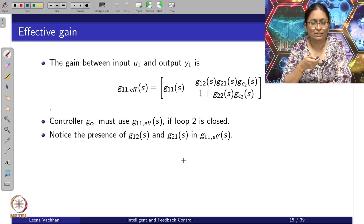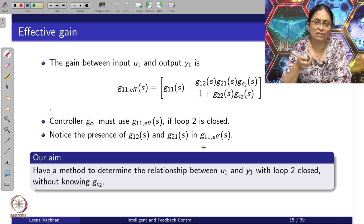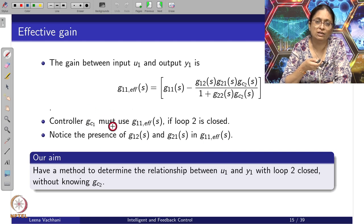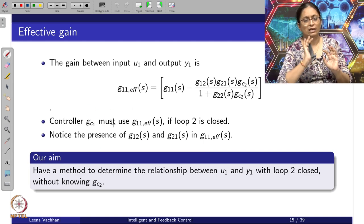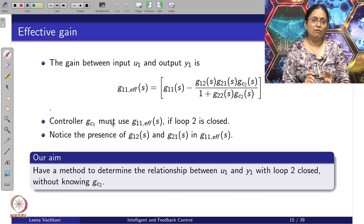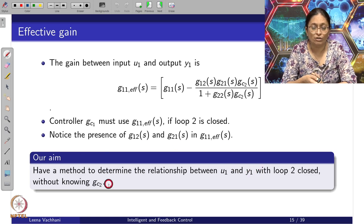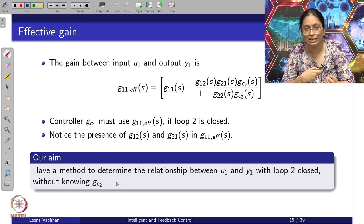If that is the case, then the presence of g_12 and g_21 needs to be noticed here. At the same time, one has to make sure that irrespective of whether loop 2 is open or closed, controller G_C1 should be designed to achieve the control objectives between y_1 and u_1. So our aim becomes to have a method to determine the relationship between u_1 and y_1 with loop 2 closed without knowing G_C2, because this becomes a chicken-and-egg problem.